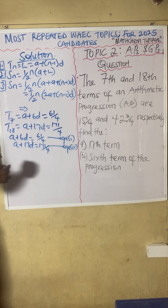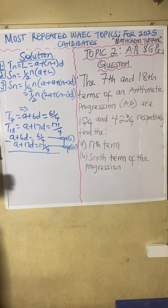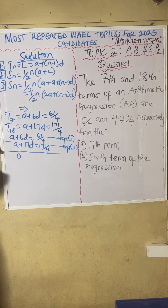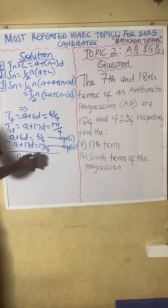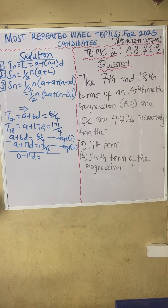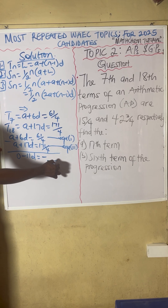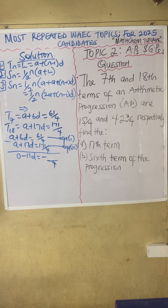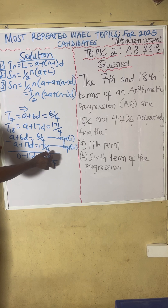So let's use the elimination method. By the time we subtract equation 1 from equation 2, the A cancels. 17 minus 6 gives minus 11D. And on the right side, 61 over 4 minus 171 over 4 gives minus 110 over 4, which simplifies to minus 55 over 2.